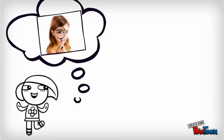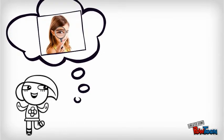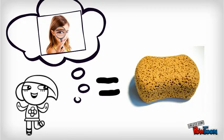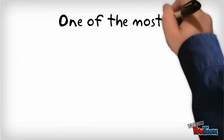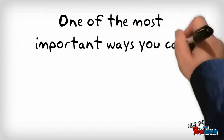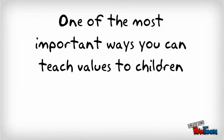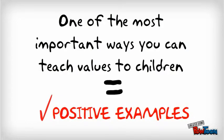We're very observant, and we soak in all that information like little sponges. One of the most important ways you can teach values to children is by providing them with a positive example.